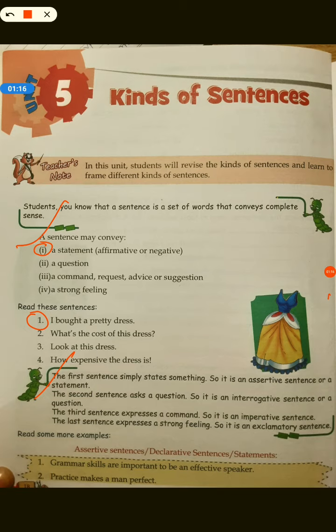The first sentence simply states something. For example: 'I bought a pretty dress' - so it is an assertive sentence or a statement. Second: 'What's the cost of the dress?' - it's a question. Third: 'Look at this dress' - it's a command, asking you to please look at the dress.